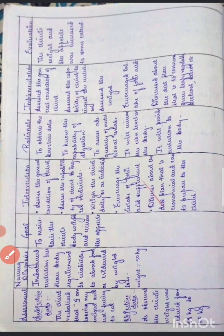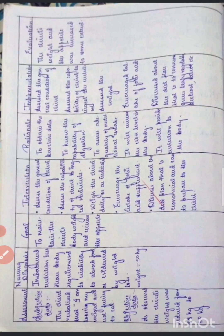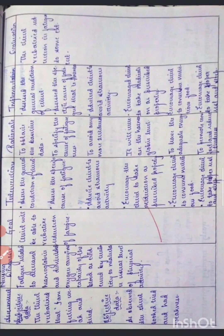The nursing care plan is mentioned here — you can go through it. The first diagnosis is imbalanced nutrition, the second is fatigue related to decreased hemoglobin, and then comes the risk for malaria.